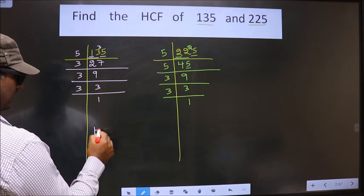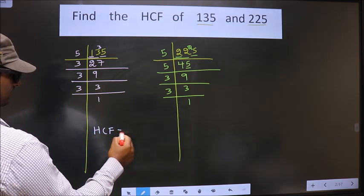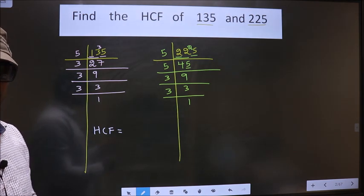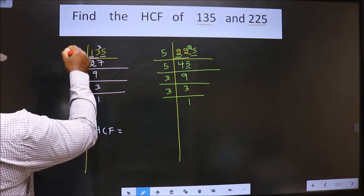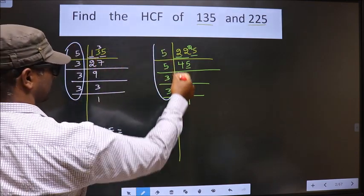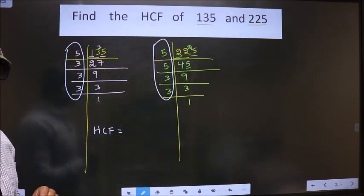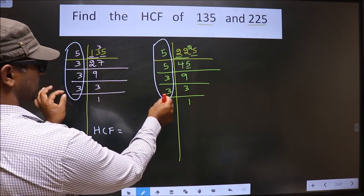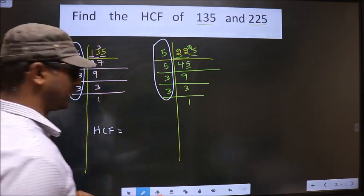So now, our HCF is, HCF is the product of the numbers present here. So, let us find the numbers present in both these places.